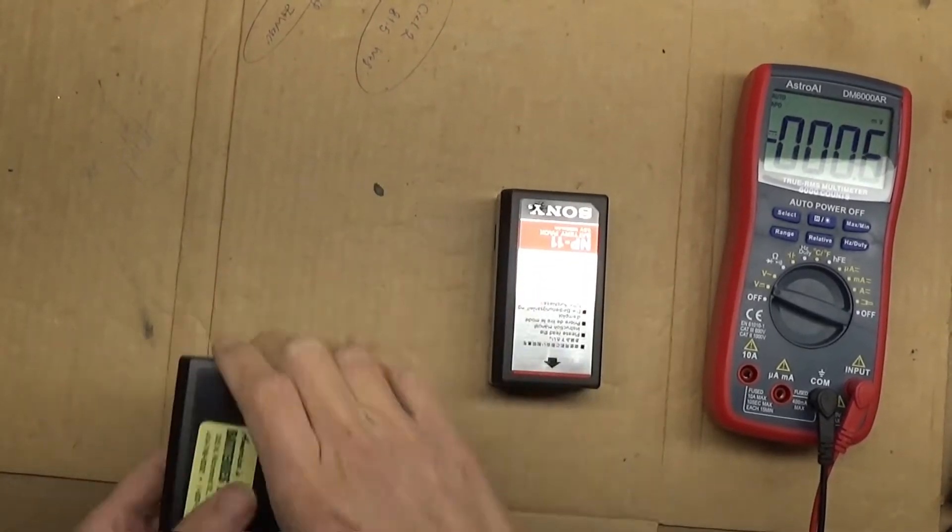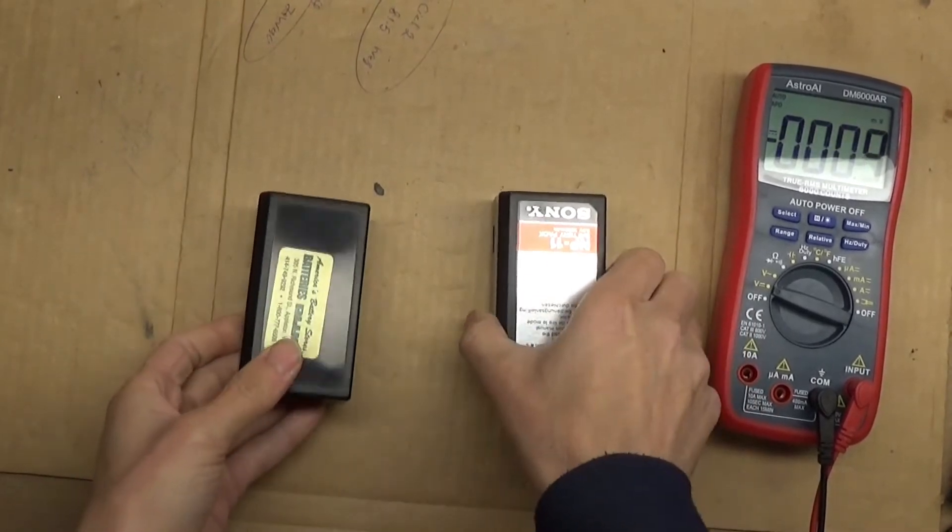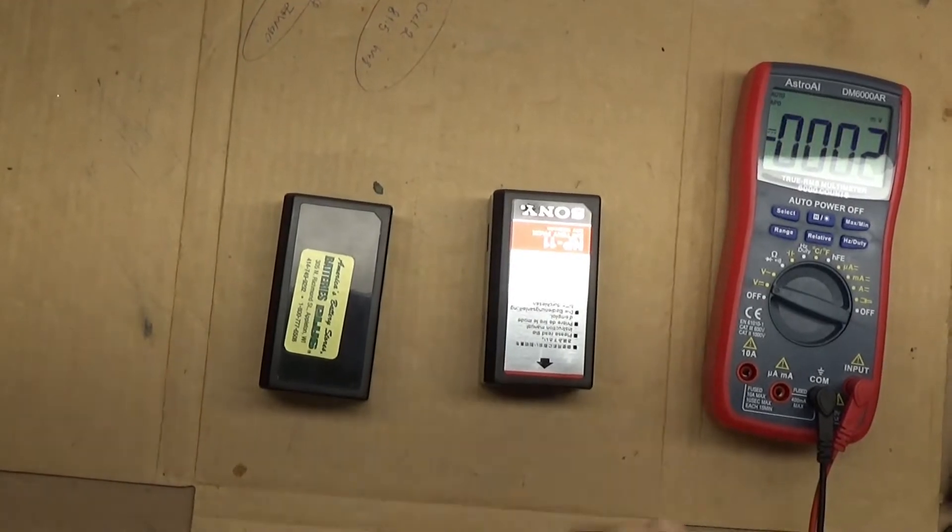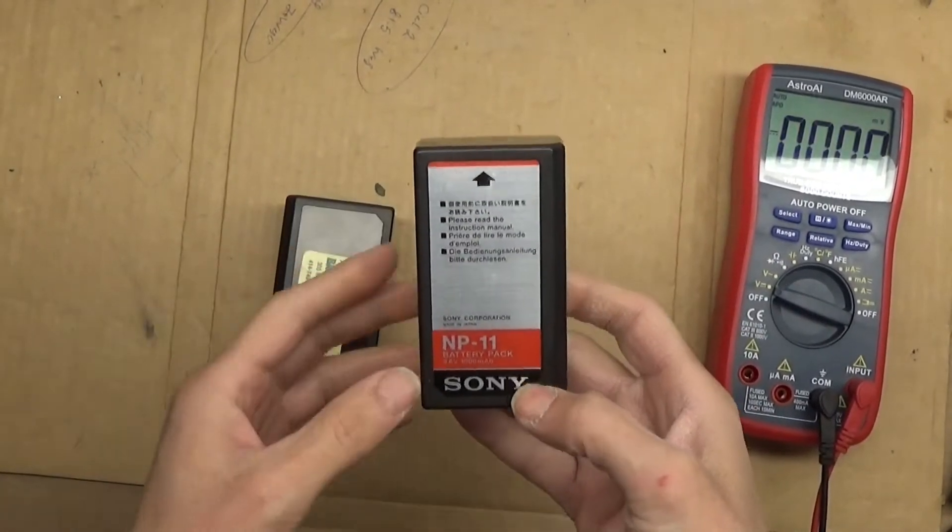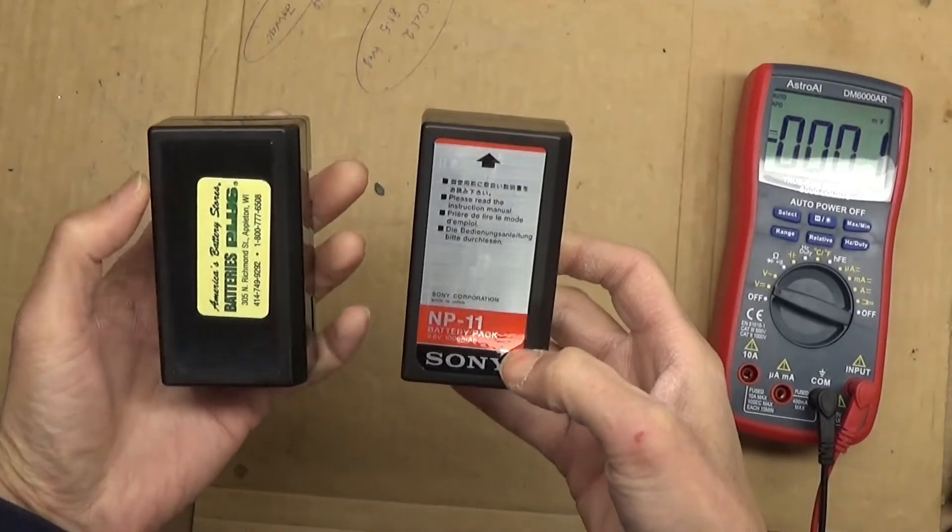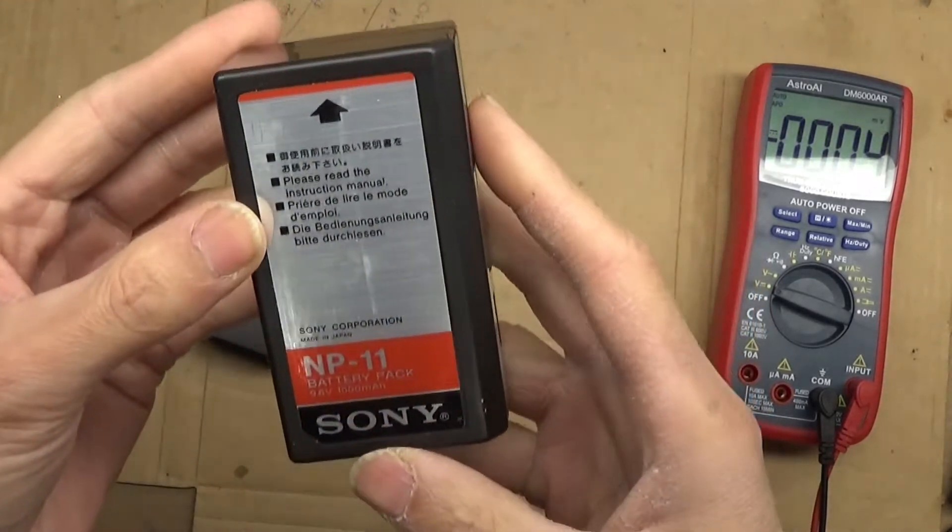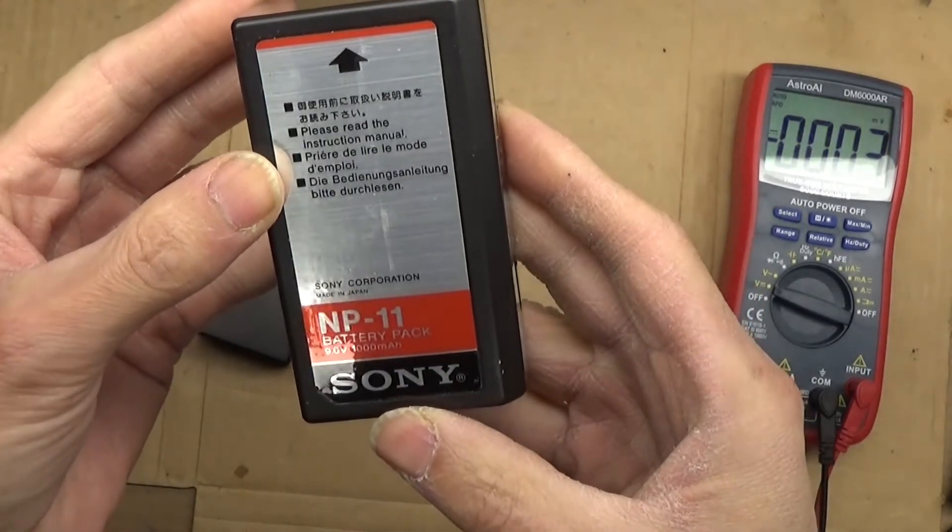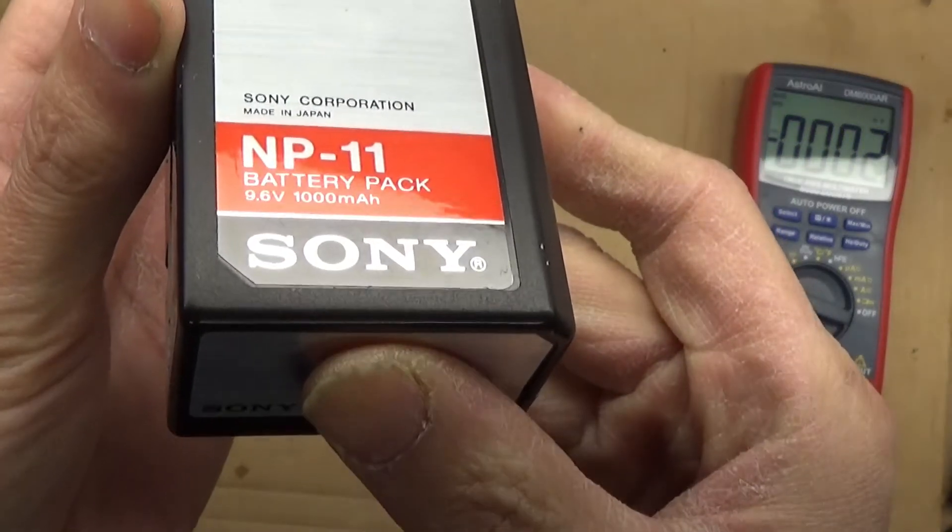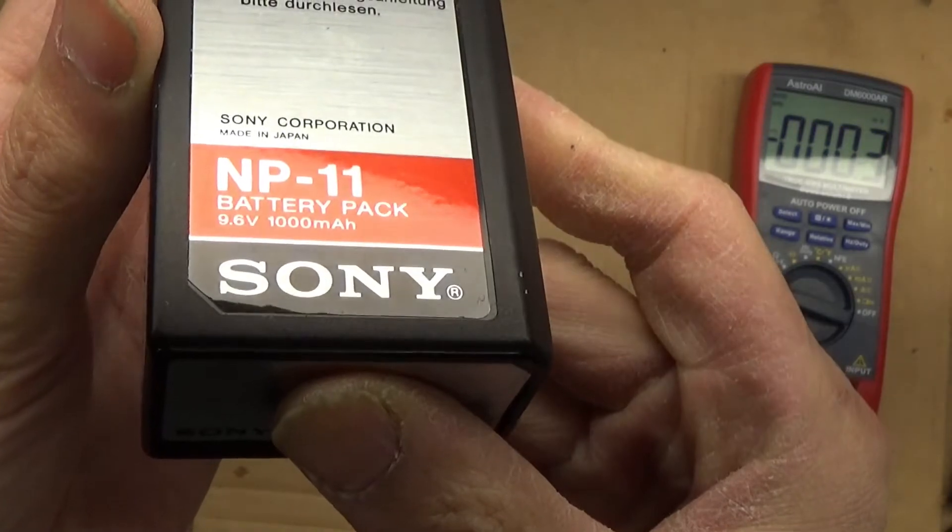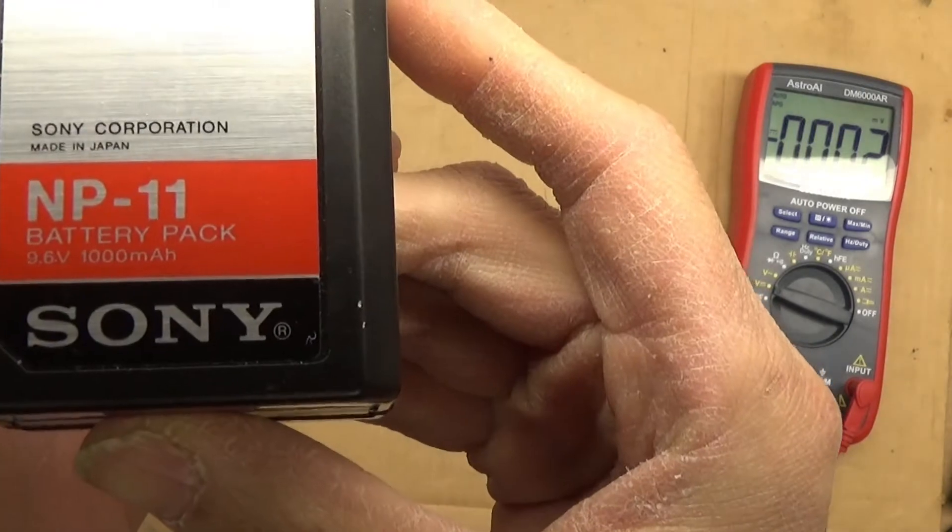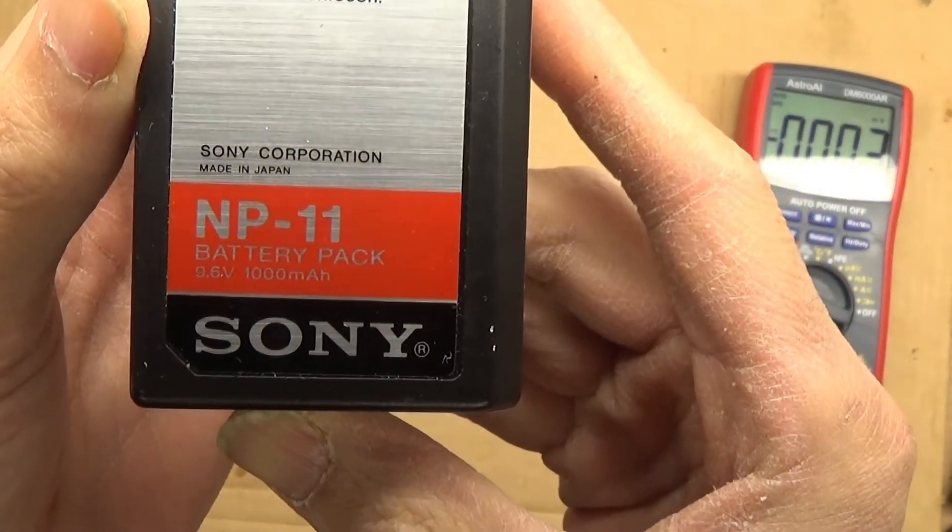Hello everyone, this is a battery NP-11 Sony, the NP-11 6.9 volt, 1000 milliamp, amp-hour.